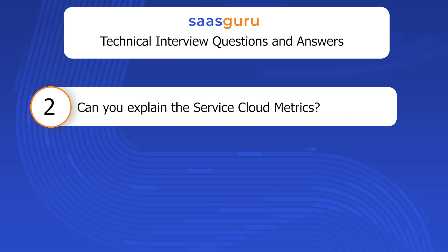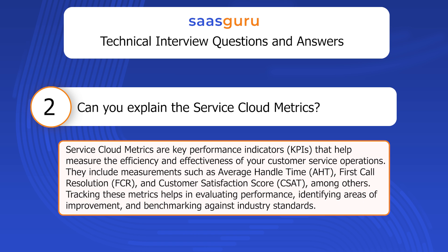Question 2: Can you explain the Service Cloud metrics? Service Cloud metrics are key performance indicators (KPIs) that help measure the efficiency and effectiveness of your customer service operations. They include measurements such as average handle time (AHT), first call resolution (FCR), and customer satisfaction score (CSAT), among others. Tracking these metrics helps in evaluating performance, identifying areas of improvement, and benchmarking against industry standards.